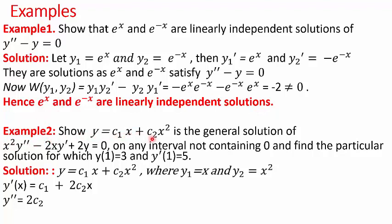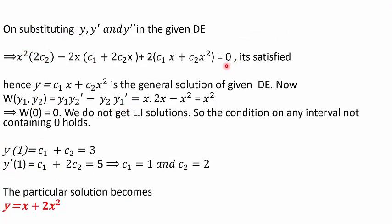In the second example, we are given y = c1·x + c2·x² and we have to show that this is the general solution of x²y'' − 2xy' + 2y = 0 on any interval not containing 0. Here y1 = x and y2 = x². Differentiating y once gives y' = c1 + 2c2·x, and again gives y'' = 2c2. Substituting y, y', and y'' into the differential equation and simplifying, we see it reduces to 0, which means y is the general solution.